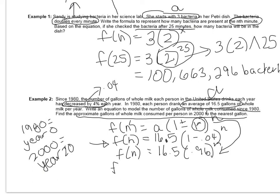So now we can find what the milk consumption was in the 20th year, or in the year 2000, by doing 16.5 times 0.96 raised to the 20th power. And it said the approximate gallons of milk. And it doesn't say, and also to the nearest gallon.